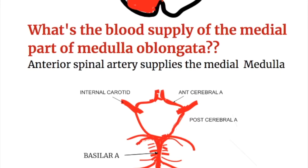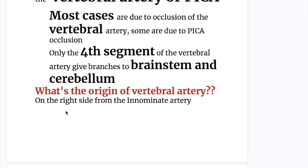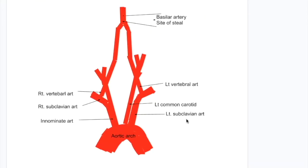What is the origin of the anterior spinal artery? Two branches, one from each vertebral artery, unite to form the anterior spinal artery, which runs in front of the medulla in the anterior spinal fissure. On the right side, the vertebral artery arises from the innominate artery, and on the left side from the subclavian artery.